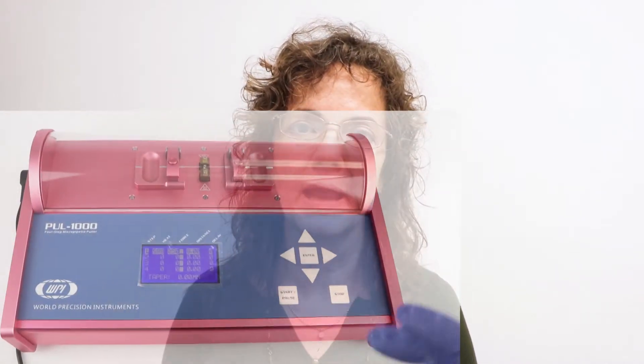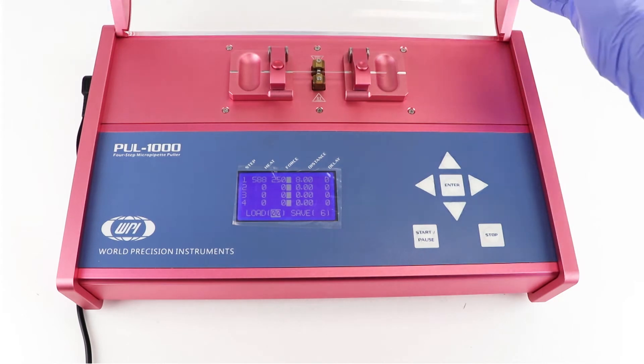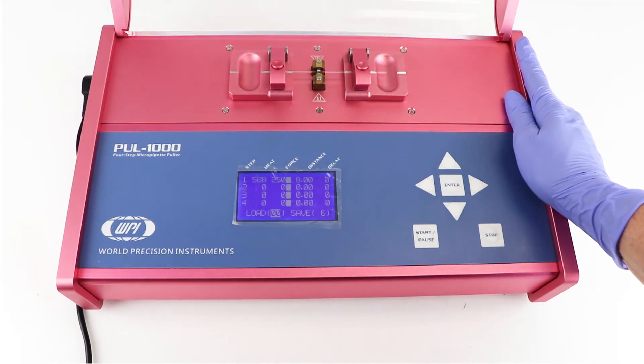The Pull 1000 is a four-stage microprocessor controlled horizontal puller designed for making micropipettes and micro electrodes, which are commonly used in intracellular recording, patch clamp, micro perfusion, and micro ejection.